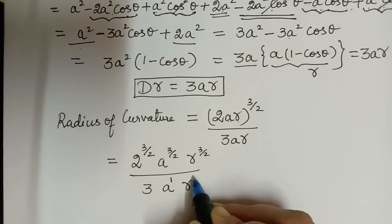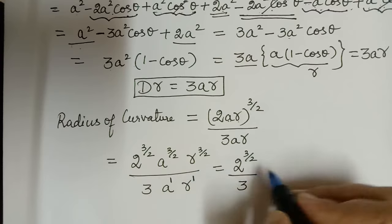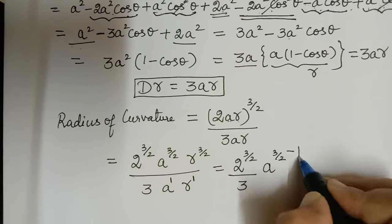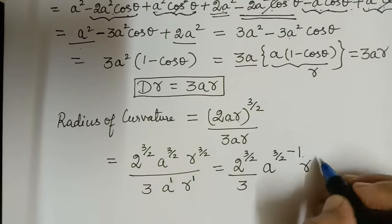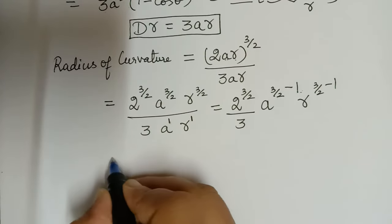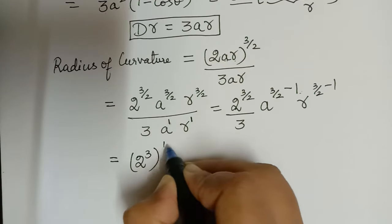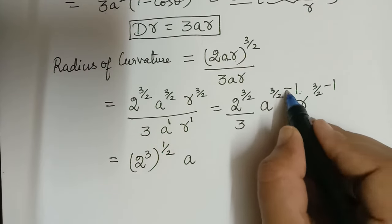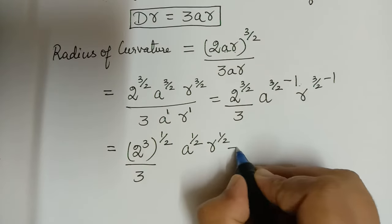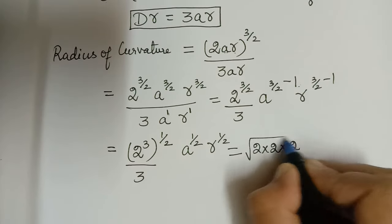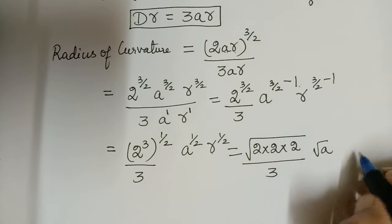Cancelling a^1 from denominator with a^(3/2) in numerator gives a^(1/2), and r^1 from denominator with r^(3/2) gives r^(1/2). So we have 2^(3/2) divided by 3, times a^(1/2) times r^(1/2). Now 2^(3/2) = 2 times √2, and a^(1/2) = √a, r^(1/2) = √r.